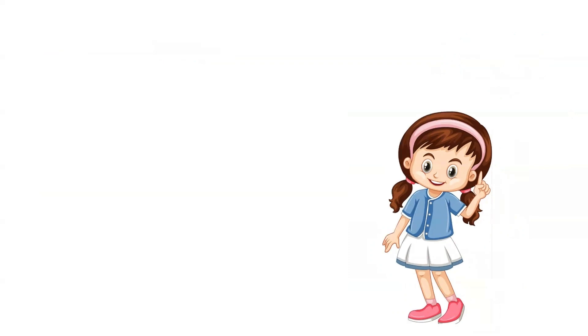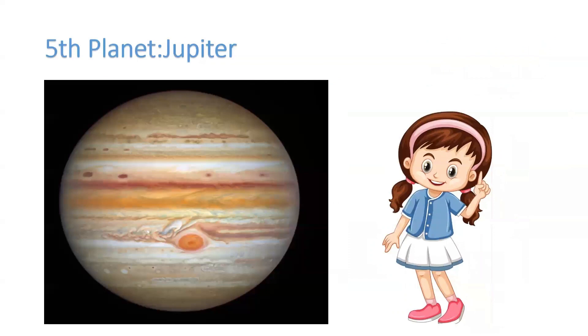Now, let's move to the fifth planet, Jupiter. Here's a picture of Jupiter. Jupiter is the largest planet in our solar system and is also known as the gas giant because it's filled with gas. Jupiter has 80 moons.